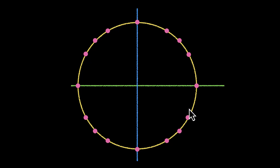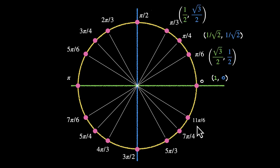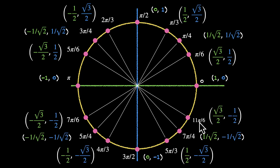This is our unit circle. It's a very powerful tool and we have used it to figure out some common ratios of some common angles. We figured out the points, these were our angles, and through the coordinates of these points we could figure out the ratios for these angles. The x-coordinates were the cos and the y-coordinates were the sin of these angles.